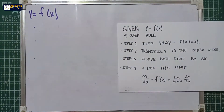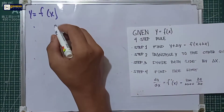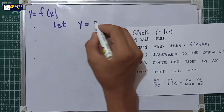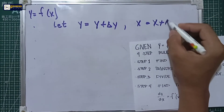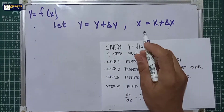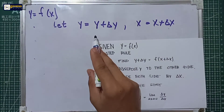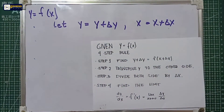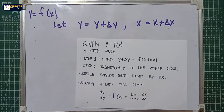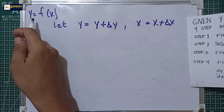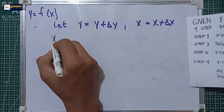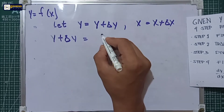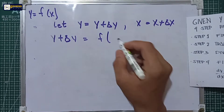Step one is simply a substitution by letting y equal to y plus delta y, and x equal to x plus delta x. It means all the x will be replaced by x plus delta x, and all the y will be replaced by y plus delta y. Commonly there is only one y, but the x can be one or more. So using this equation, all the y will become y plus delta y, and all the x will become x plus delta x.